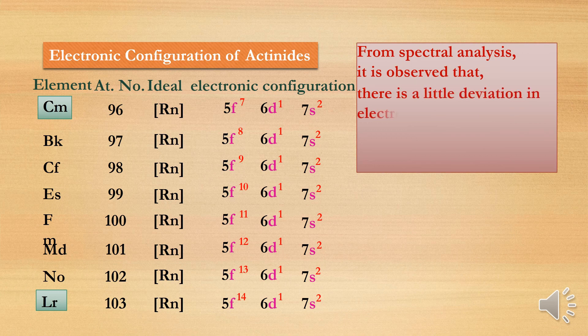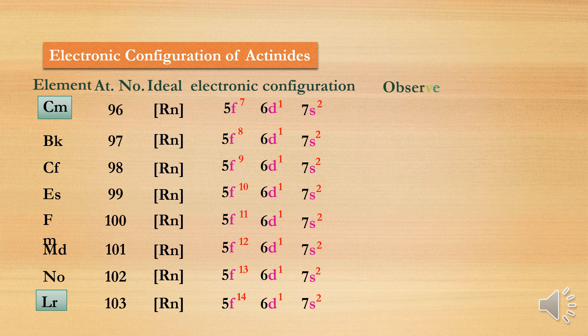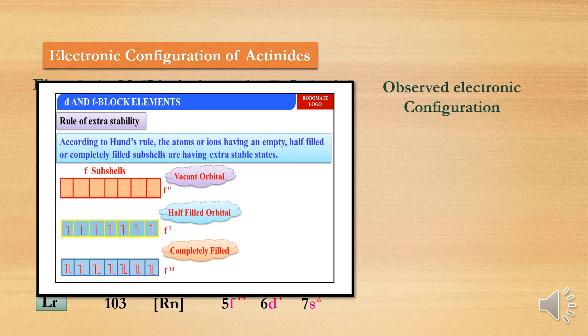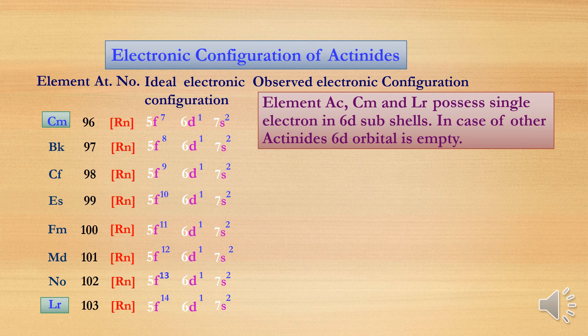From spectral analysis, it is observed that there is a slight deviation in electronic configuration, and therefore two electronic configurations are assigned. We know that vacant, half-filled, and completely filled orbitals are extra stable. Due to this concept, a second configuration called the observed electronic configuration is assigned. In this, actinium, curium, and lawrencium possess a single electron in the 6d subshell, while in all other actinides the 6d orbital is empty.